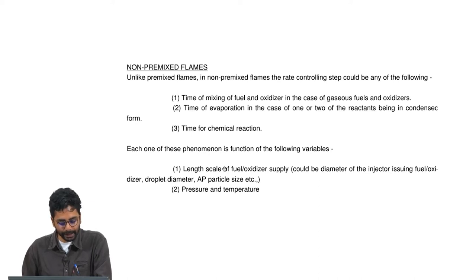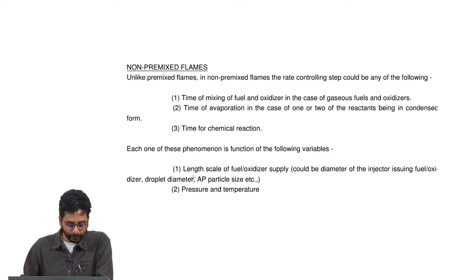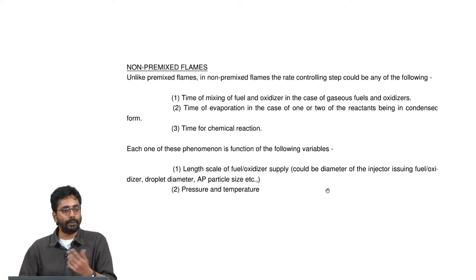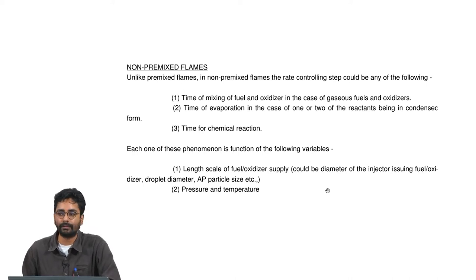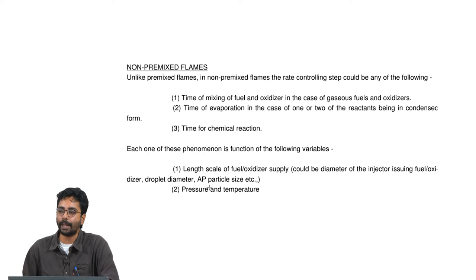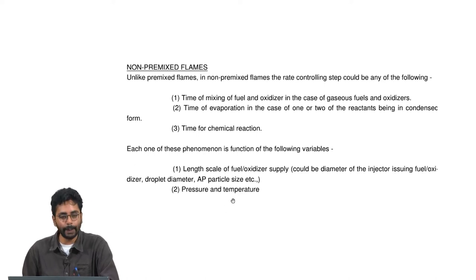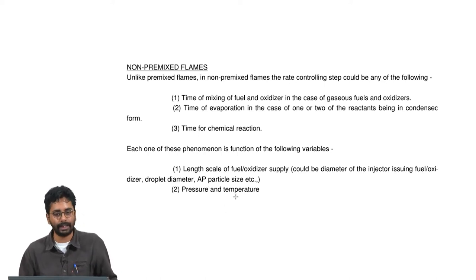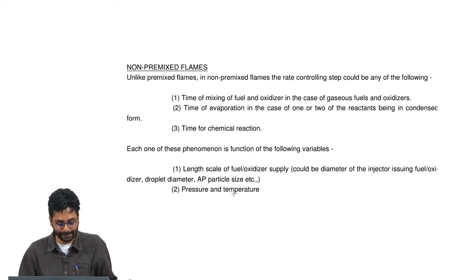Each of these phenomena is a function of the length scale of fuel-oxidizer supply — for example, the diameter of the injector, the droplet diameter, or the AP ammonium perchlorate particle size — and other variables including pressure and temperature.